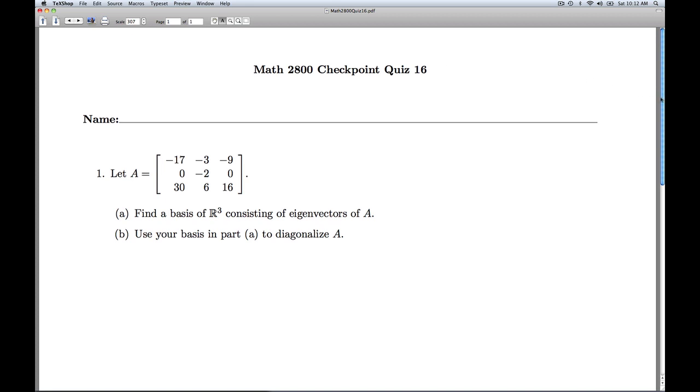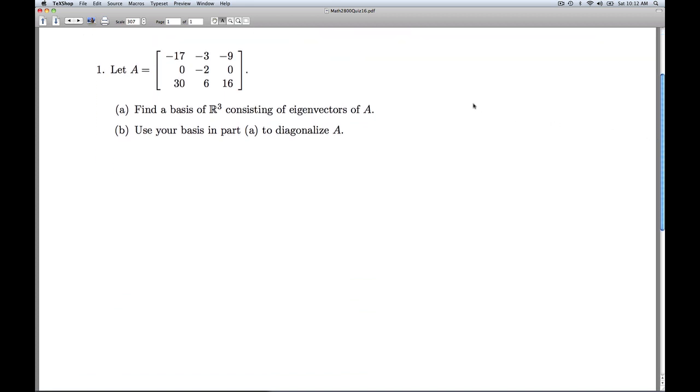Hi folks, this is linear algebra quiz 16. We're given a 3 by 3 matrix A. We're asked to find the basis of R³ consisting of eigenvectors of A, and then we're supposed to use our basis from part A to diagonalize A.